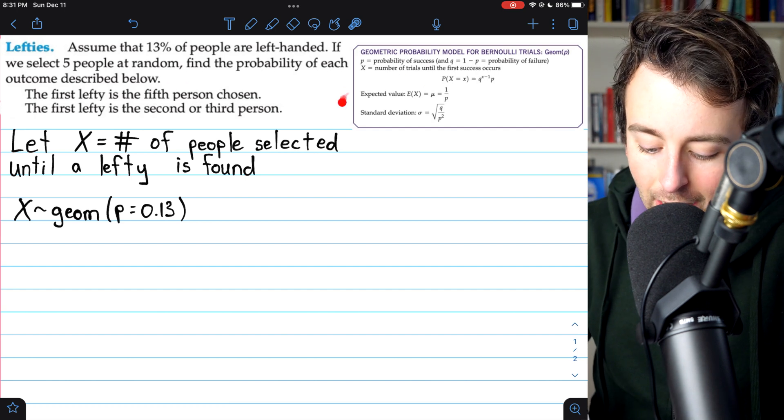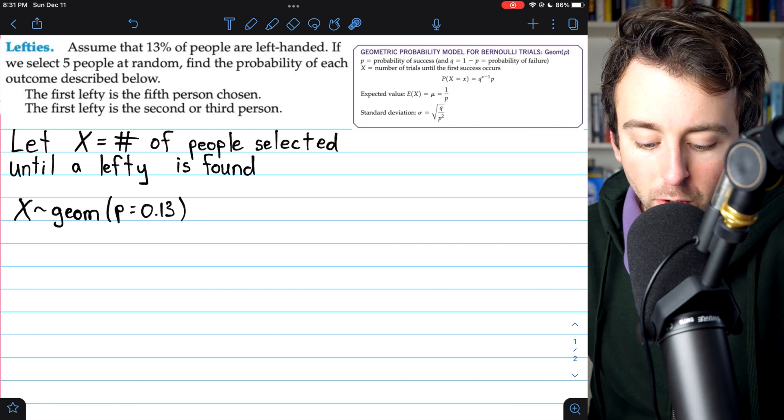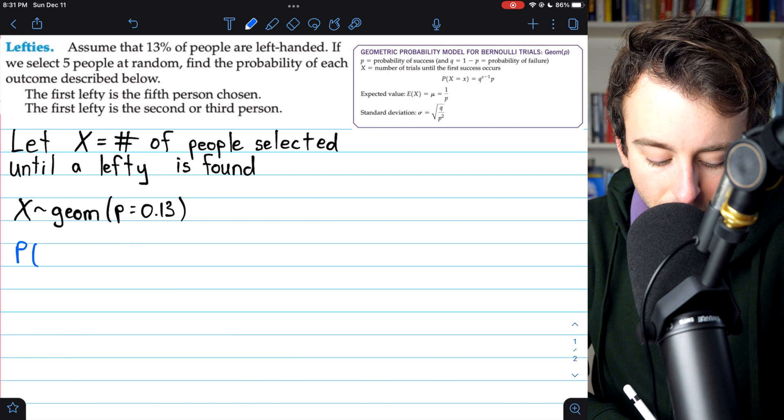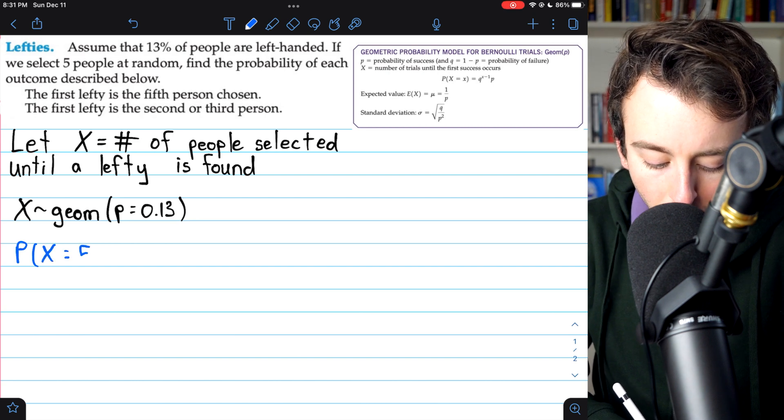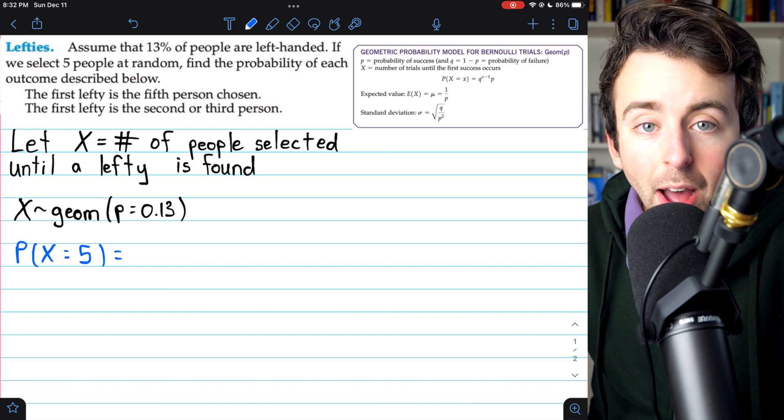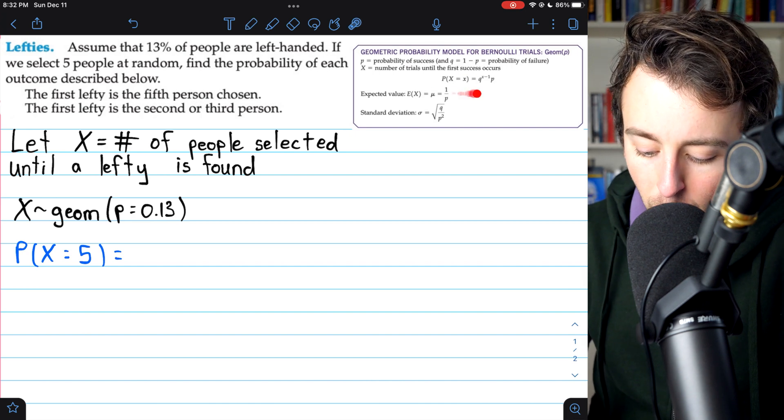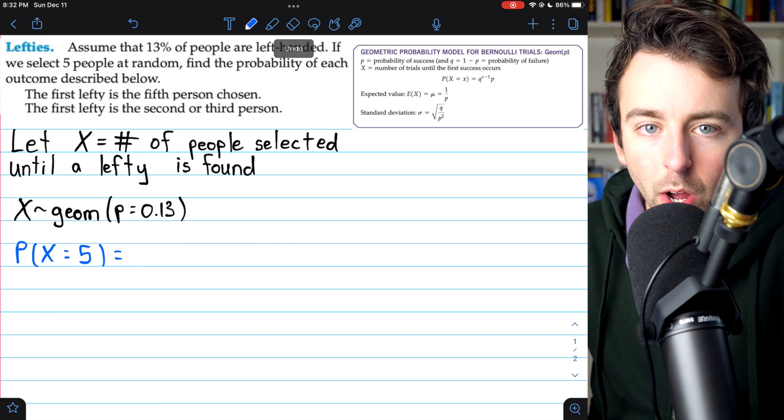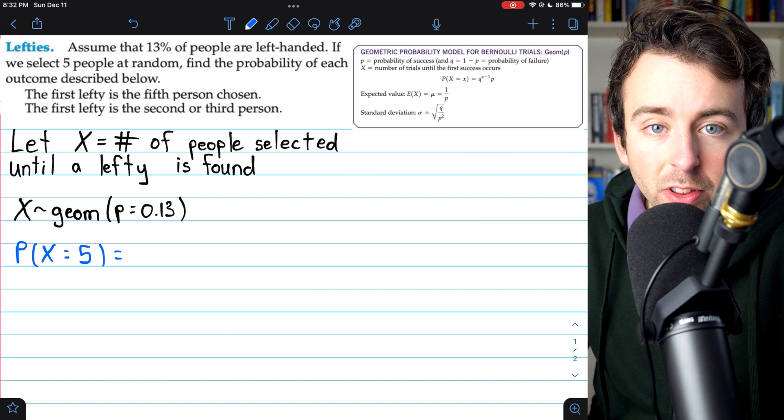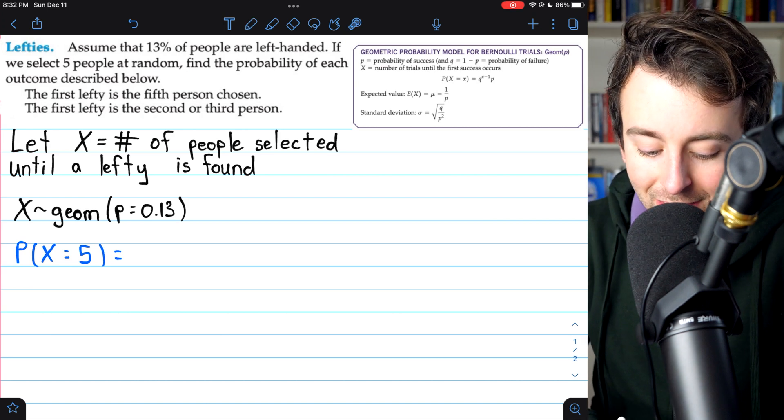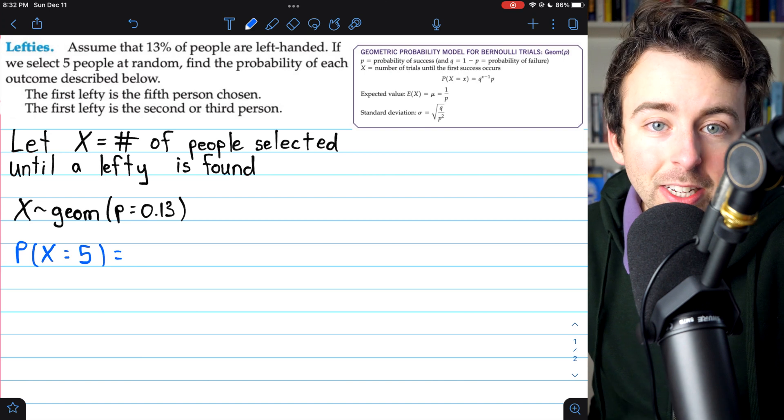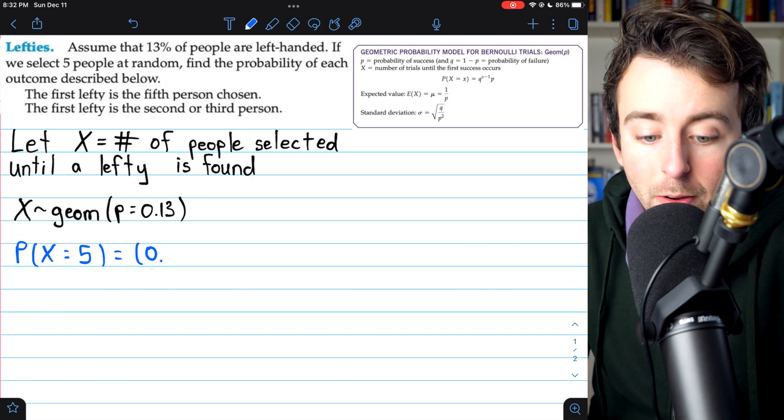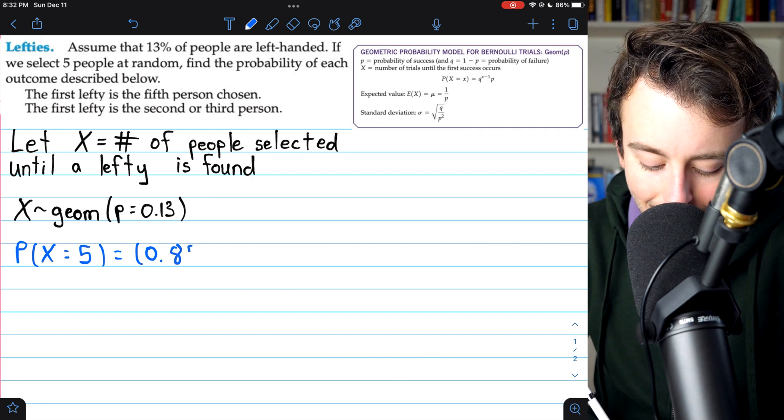Let's calculate the probability that the first lefty is the fifth person chosen. Then we'll take a quick second to calculate the expected value and the standard deviation of X. So to calculate the probability that our random variable X is equal to 5, and we can see here what the formula for that is. It's Q to the power of 5 minus 1, and Q is just the probability of failure. There's a 13% chance we get a lefty.